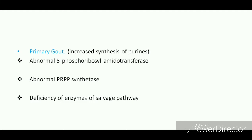The third enzyme abnormality is deficiency of enzymes of the salvage pathway. This in turn leads to increased availability of PRPP, which is utilized for the synthesis of purines, leading to increased degradation of purines and finally increased uric acid levels in the blood.